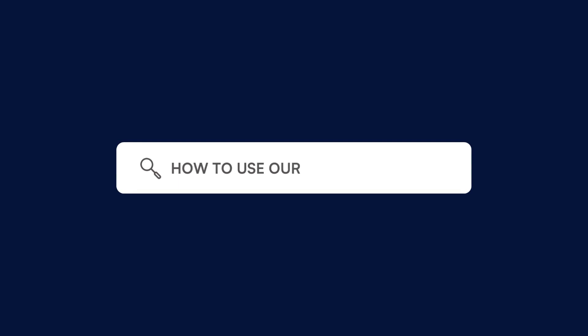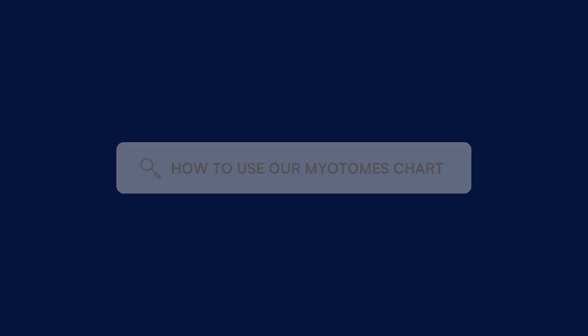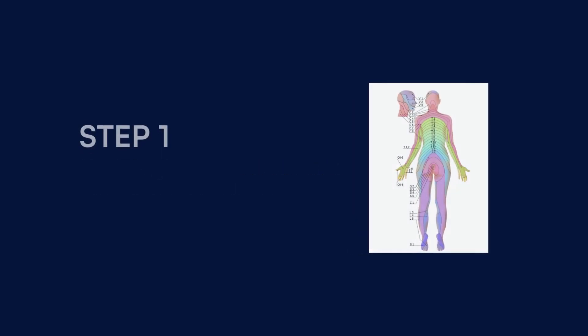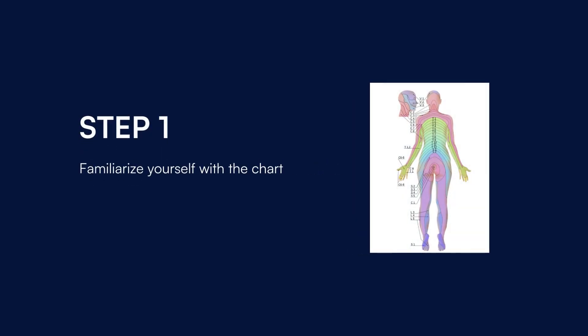To use our myotomes chart, follow these steps. Download our myotomes chart from the CarePatron platform, which you can find in the link in the description. Study the chart's color-coded myotomes, with each color representing a specific spinal nerve and muscle group. This understanding aids in accurate patient assessment and diagnosis.